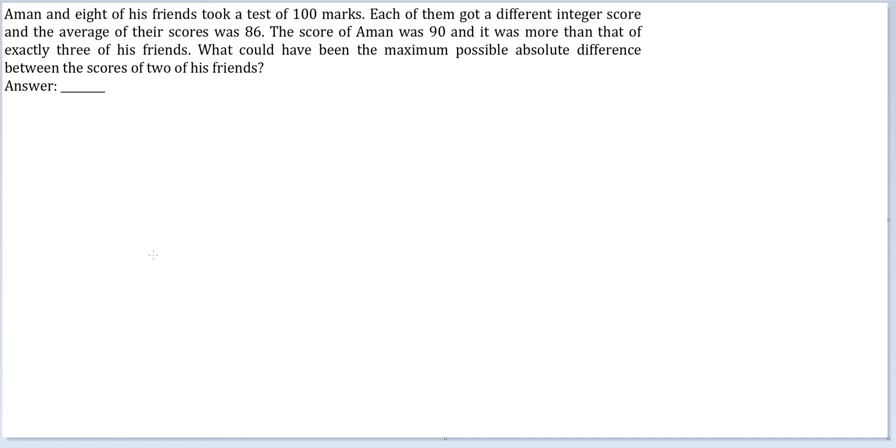Okay, so Amman has got a score of more than 3 of his friends and less than 5 of his friends. What could have been the maximum possible absolute difference between the scores of 2 of his friends?